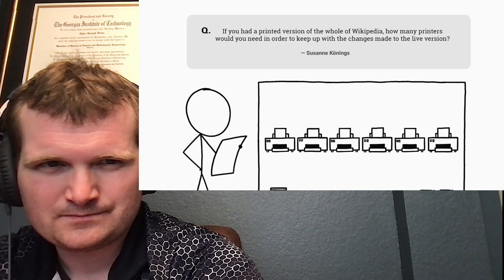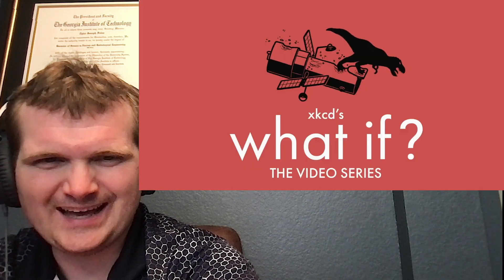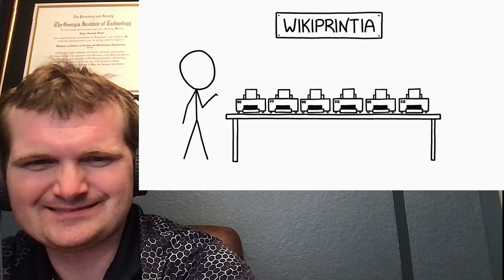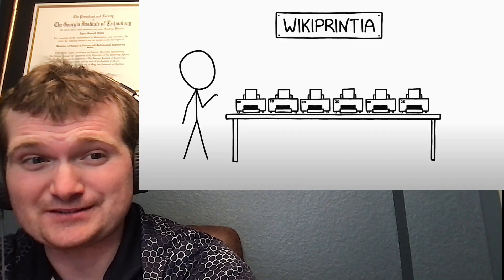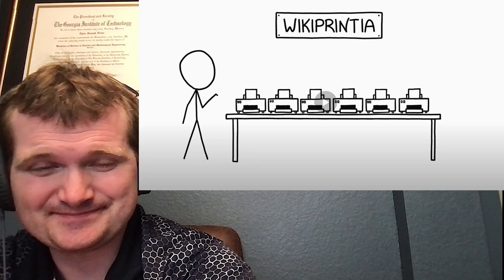For the English Wikipedia, you'd need this many. Six printers is surprisingly few, but before you try to create a live updating paper version of Wikipedia, how good are these printers? Are they going to jam?